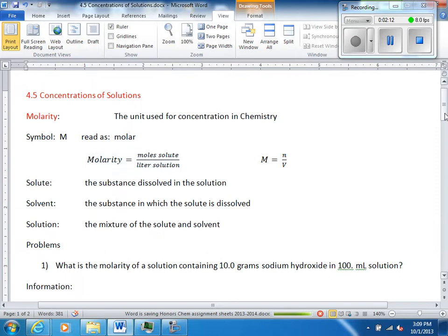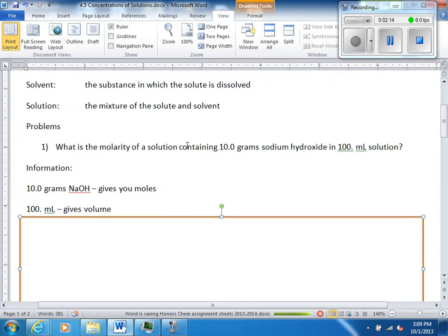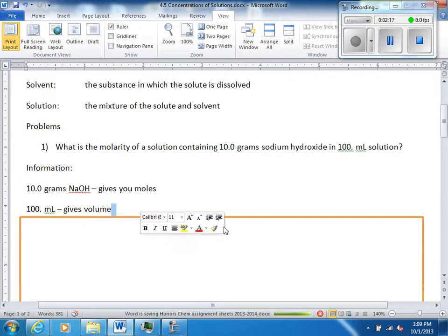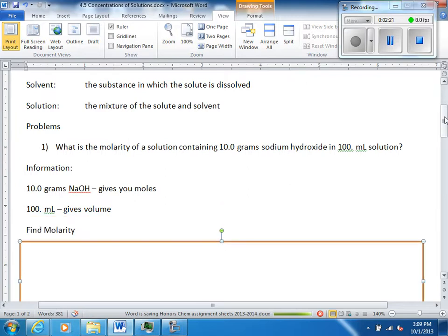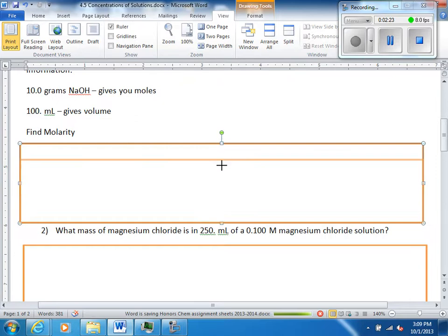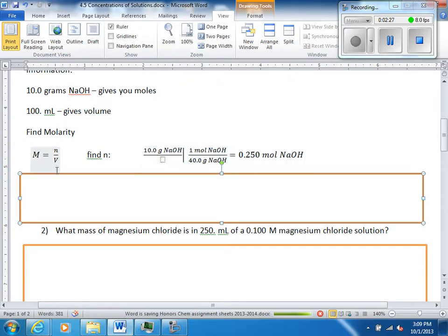So, we're given something that can get us moles. We're given volume. We look at our equation. Here's our equation right here. And it says, what is the molarity? So, we are trying to find molarity. Okay, we have our equation. Molarity is moles over liters. M is N over V. We need to find N first, the moles. Remember, N is moles. So, this piece right here gives us our moles. We look up at our information. Volume is not going to give us moles. But the grams gives us moles. We use our molar mass. Can't forget how to do our conversions. We're back to conversions.